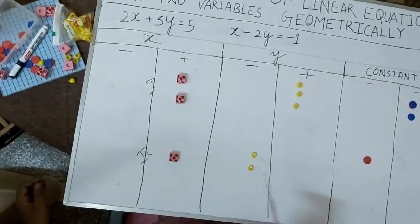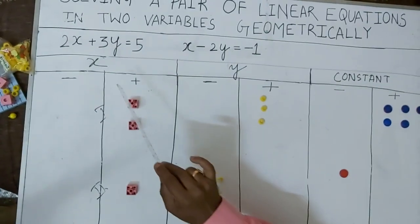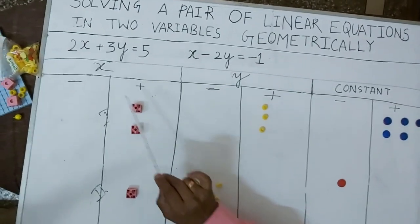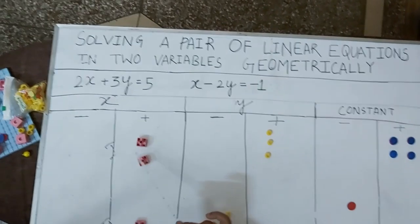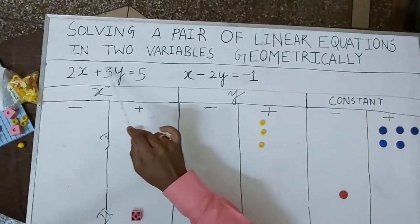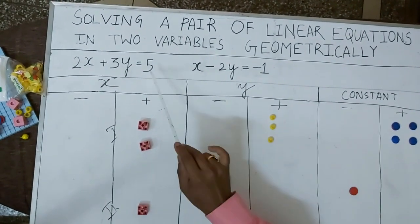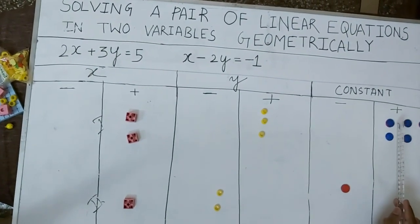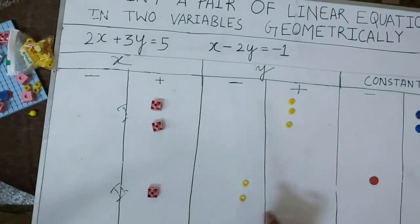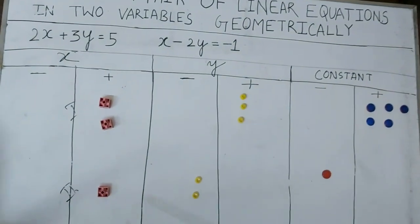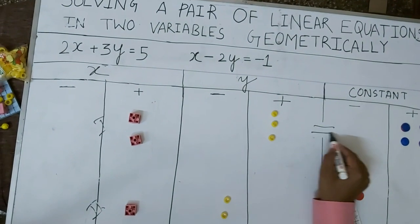Now let us start the activity. For the first equation 2x plus 3y equal to 5: each cube is x, so I have put two cubes on the plus side for 2x. On the positive side of y, I put three yellow beads for 3y. Each blue coin represents plus 1, so I have placed five blue coins to represent plus 5. This completes the representation of 2x plus 3y equal to 5.